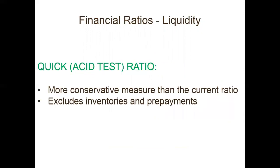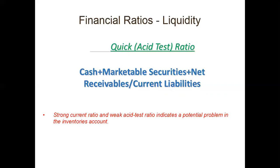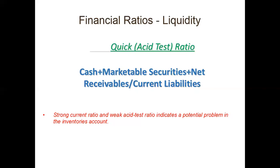The next liquidity ratio is the quick asset ratio. This is more conservative than the current ratio because you exclude inventories and prepayments from the formula. The formula is: cash plus marketable securities plus net receivables, divided by current liabilities. A strong current ratio but weak quick asset ratio indicates a potential problem in the inventories account, because the current ratio may be high due to higher inventories with less actual cash.